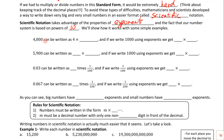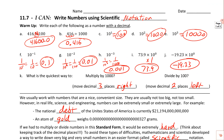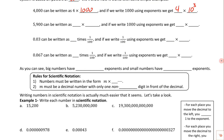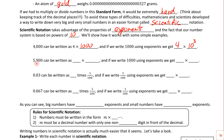Here's what we do. We take 4,000 and think: 4 times 1,000. Writing 1,000 using exponents gives us 4 times 10 to the third — the exponent matches the number of zeros. For 5,900, we write it as 5.9 times 1,000, and replacing 1,000 with its exponent form gives us 5.9 times 10 to the third. So we keep the decimal number and write times 10 to some power.